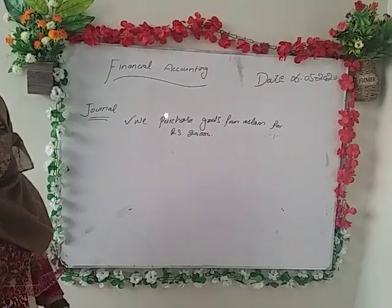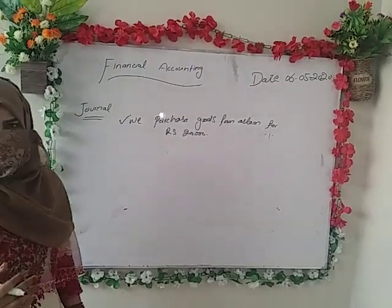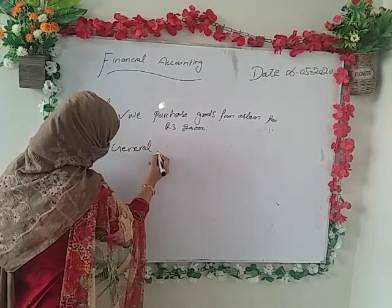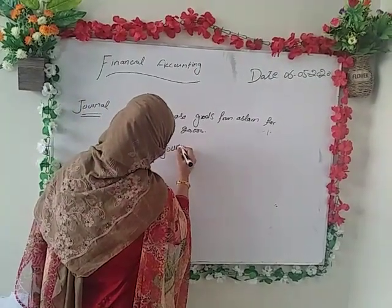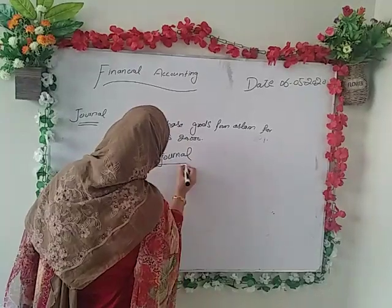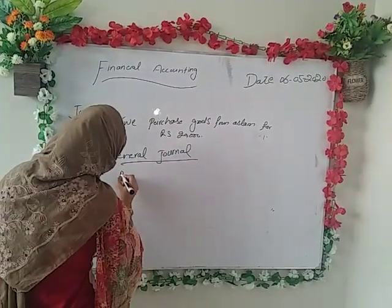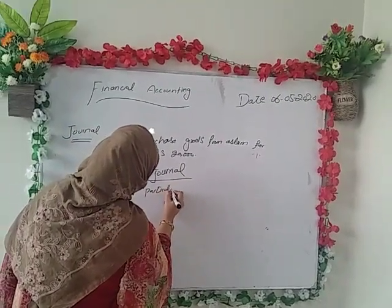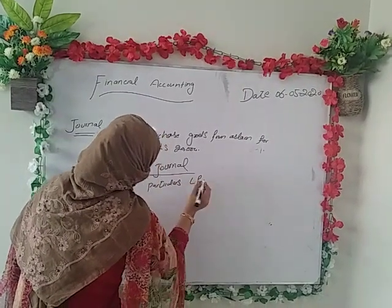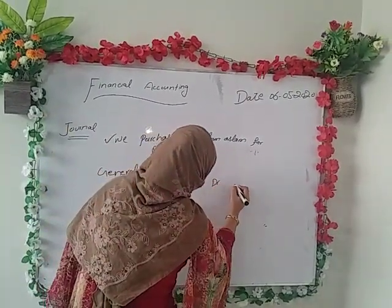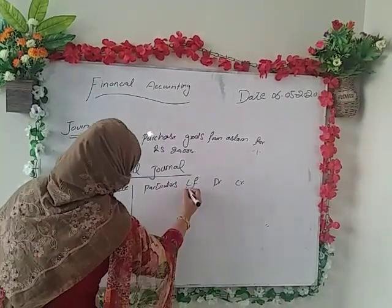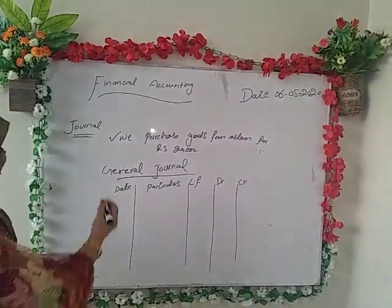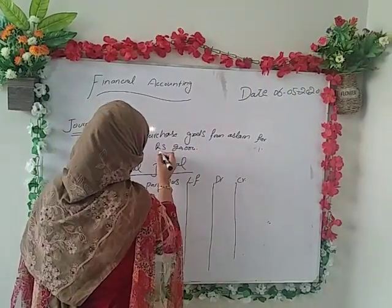This is a format of accounting — this is the general journal format. This is the easiest way; this is how accounting starts. This is the first format. There is a date, after this there are particulars, then debit and credit columns. For example, we have written that we purchased goods from Aslam for Rs. 25,000.